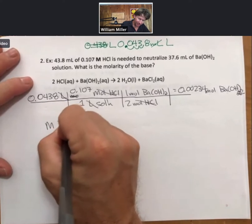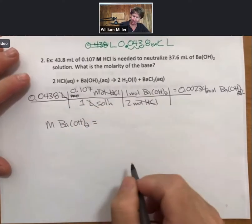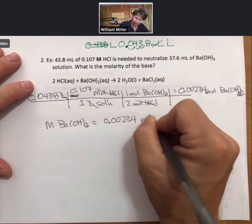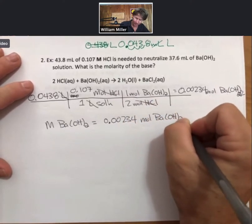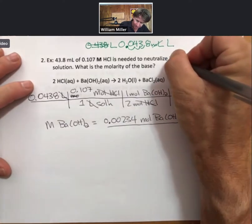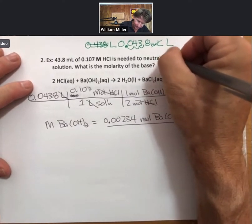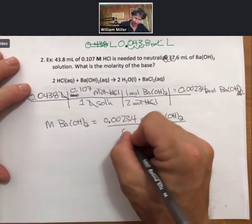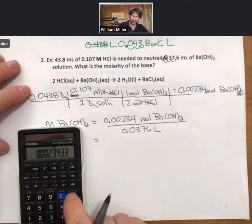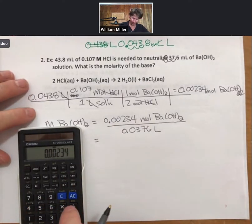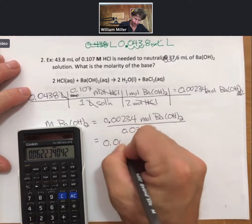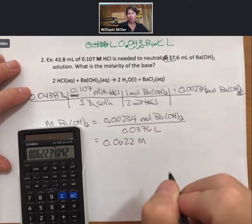So molarity of barium hydroxide is going to equal moles of barium hydroxide over liters of solution. Or again, I will have to convert that to liters, 0.0376 liters. And then I multiply this out. I'm going to go back to 0.00234 divided by 0.0376, which gives 0.0622 molarity of barium hydroxide.